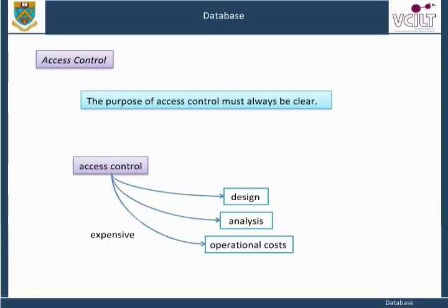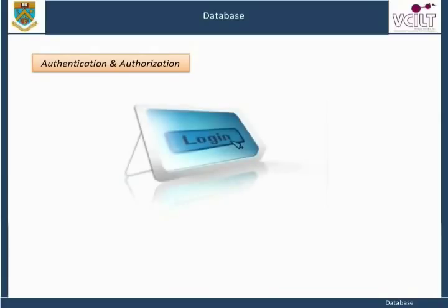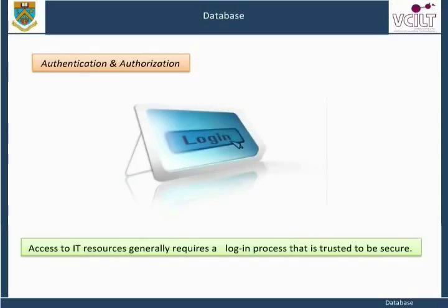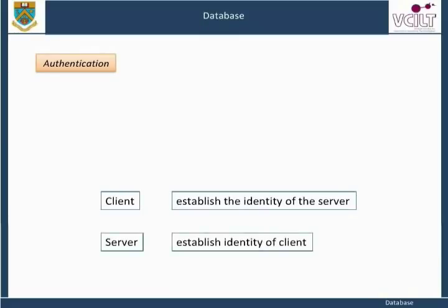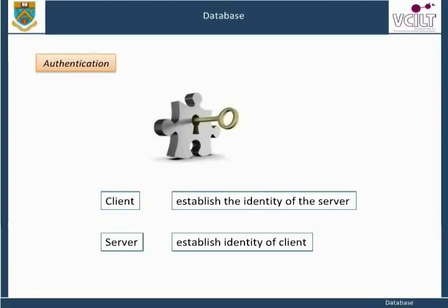We are all familiar as users with the login requirement of most systems. Access to IT resources generally requires a login process that is trusted to be secure. This topic is about access to database management systems and is an overview of the process from the DBA perspective. Most of what follows is directly about relational client-server systems. The client has to establish the identity of the server, and the server has to establish the identity of the client. This is done often by means of shared secrets — either a password and user ID combination, or shared biographical and/or biometric data. It can also be achieved by a system of higher authority which has previously established authentication.